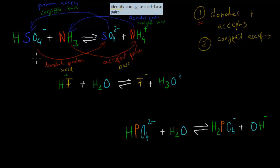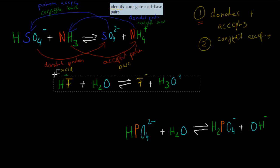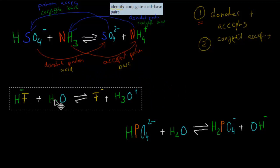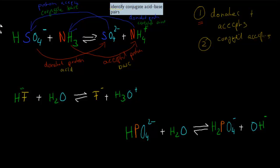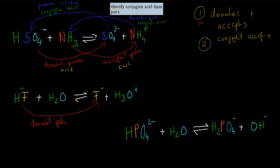The second example: we've got hydrofluoric acid plus water. That goes into a fluoride ion and a hydronium ion. Which one has accepted and which one has donated protons? In this case, we have a hydrogen on HF but no hydrogen on the fluoride ion, so it has donated a proton, which makes it the acid. And water would have to act as the base — H2O has one additional hydrogen in H3O⁺, so it has accepted a proton, which makes it the base.